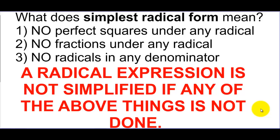There are three things on our list for something to be in simplest radical form. First, there cannot be any perfect squares under the radicals — that's breaking out perfect squares like 4, 9, and 16 that we can actually square root. Second, you cannot have any fractions underneath the radicals; you treat the numerator and denominator as separate problems and simplify them.